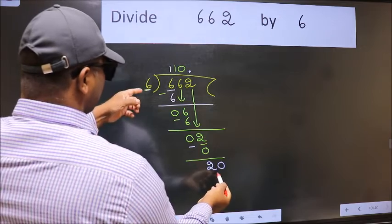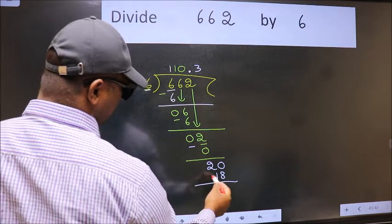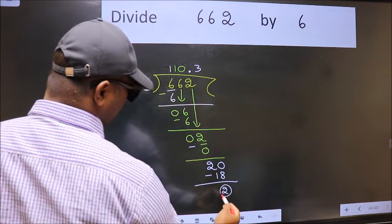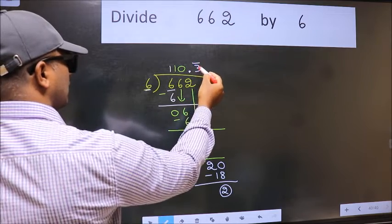A number close to 20 in 6 table is 6 times 3 is 18. Now we subtract. We got 2 again. That means we get bar on this number.